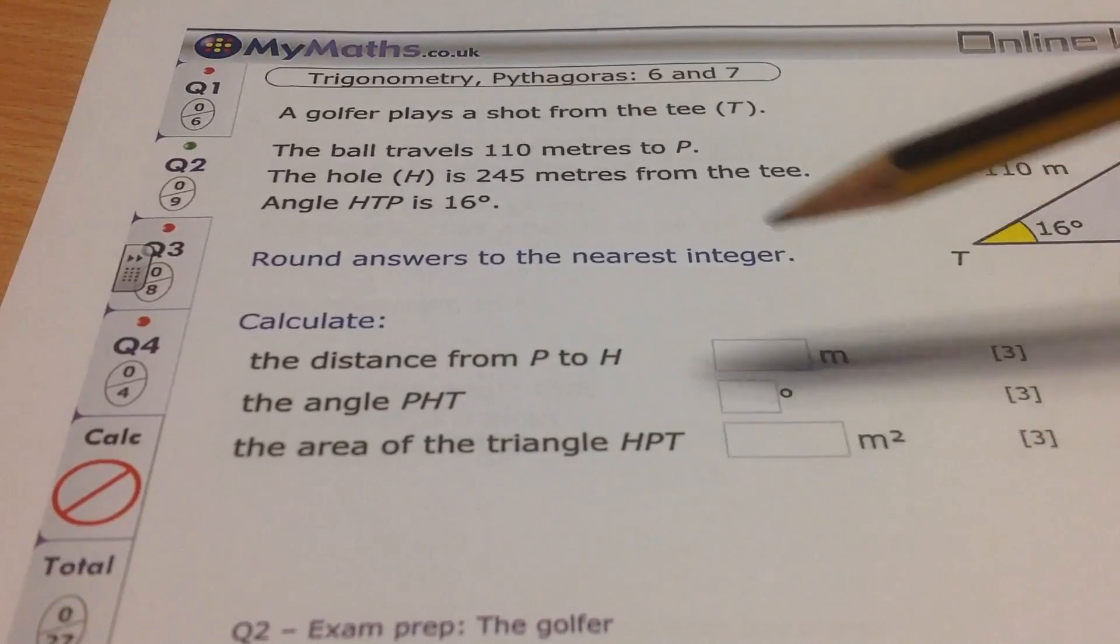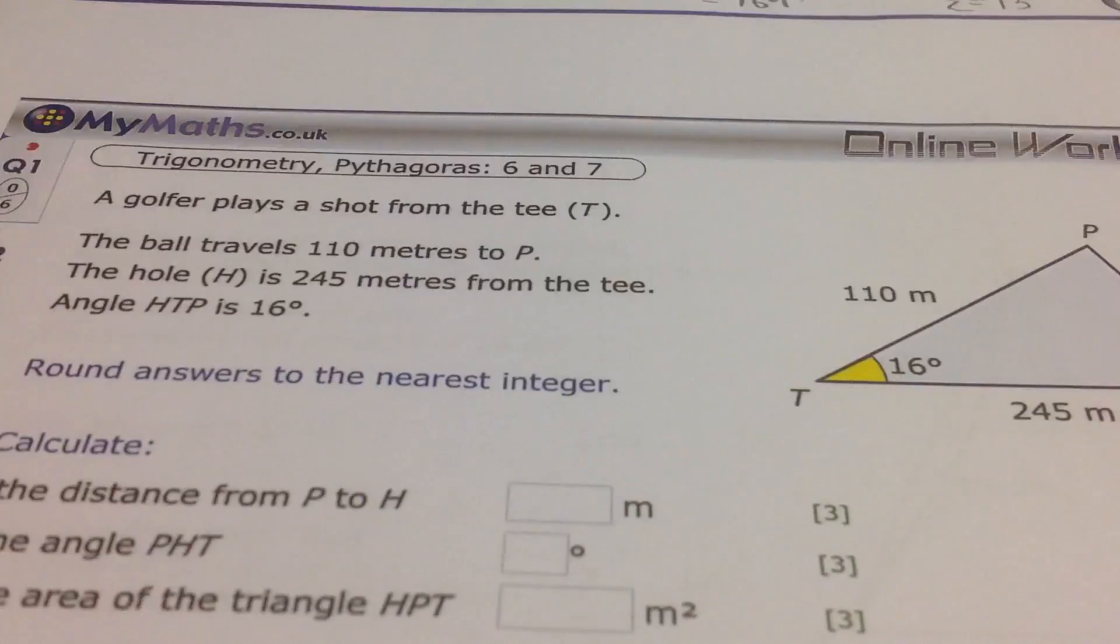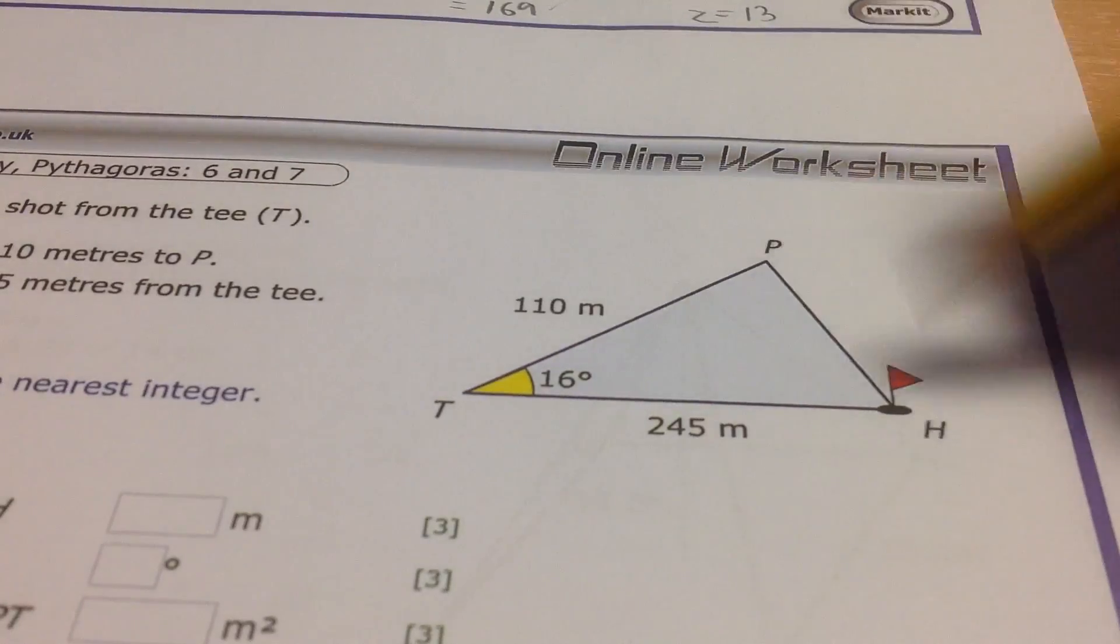So we need to find, first of all, the distance from P to H. P to H, this distance here. So that's my first X.